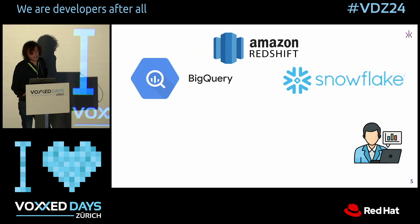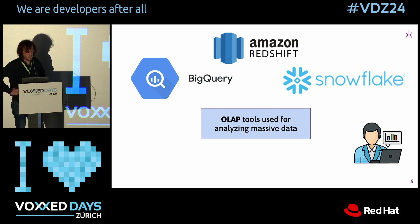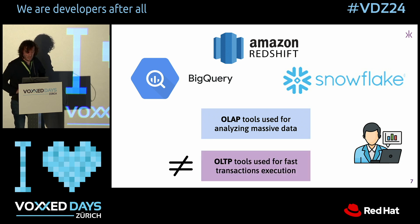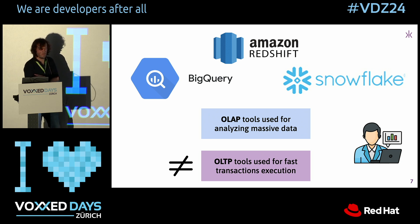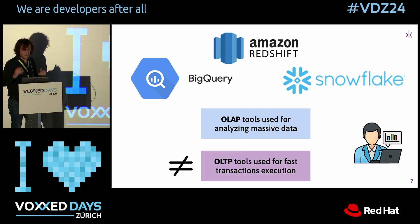To do that, most data analysts, like also data scientists, they use tools. Nowadays most companies are in the cloud, so they use tools from the cloud provider. Like in GCP they use BigQuery, they can use Amazon Redshift or Amazon Athena, they can use Snowflake. It's what's called OLAP tools — online analytical processing tools. It's different from OLTP tools, which you would be using if you have a transactional database. OLAP databases are used to do analytics, and that's the main focus of my talk.